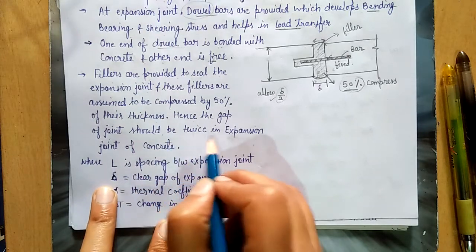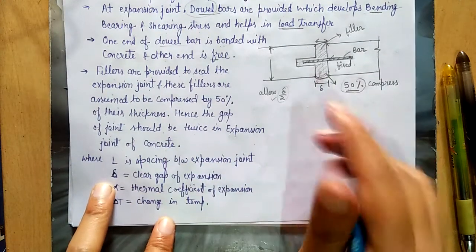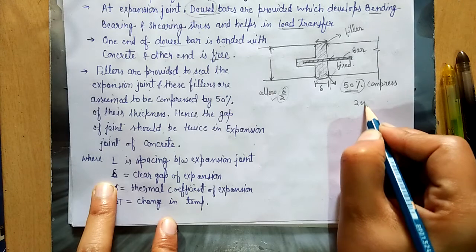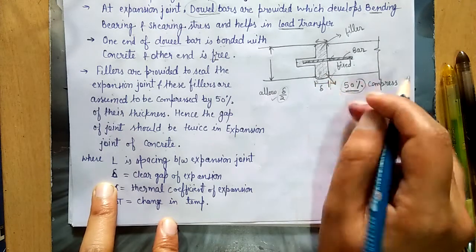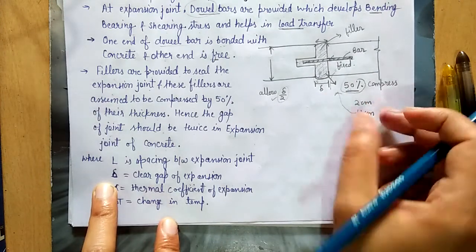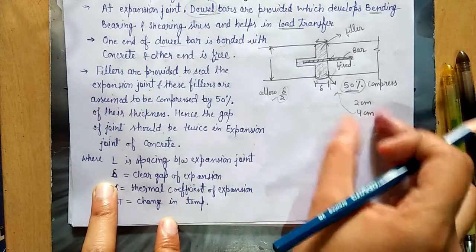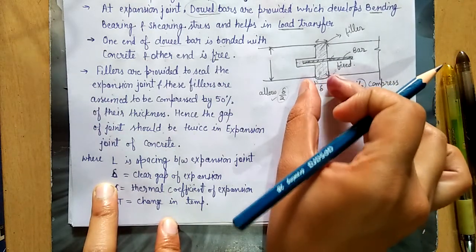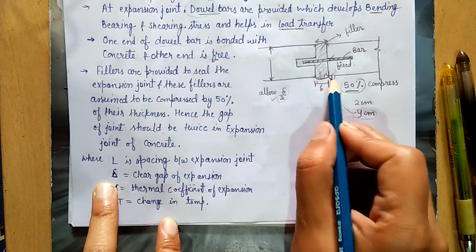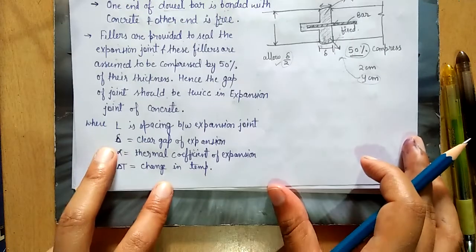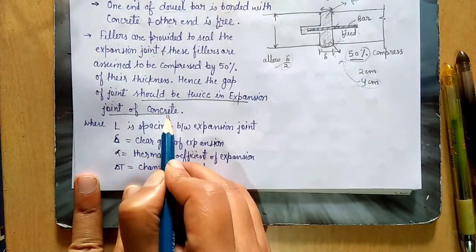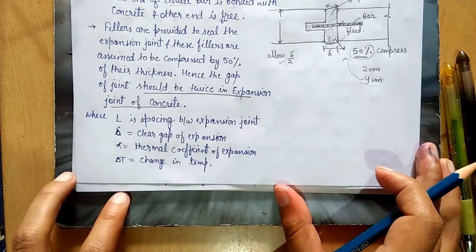Hence, the gap of the joint should be twice the expected expansion in the concrete. If the expected expansion is 2 cm, then the gap provided at the joint should be 4 cm. The filler fills this 4 cm gap; when compressed 50%, it occupies 2 cm, leaving 2 cm of free space for the pavement to expand. That is why the gap should be twice the anticipated expansion.